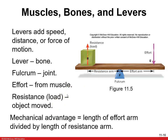Your body is all pulleys and levers — it's either a first class lever, a second class lever, or a third class lever. Levers add speed, distance, or force of motion. The lever is usually your bone, the fulcrum is your joint, and the effort comes from the muscle. Mechanical advantage equals the length of the effort arm divided by the length of the resistance arm. A first class lever has the fulcrum in the middle — like a seesaw or extending the neck. A second class lever has resistance in the middle — like lifting a wheelbarrow. A third class lever has effort in the middle — like paddling a canoe or flexing the elbow.